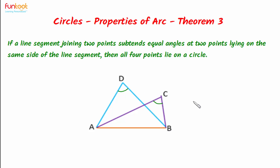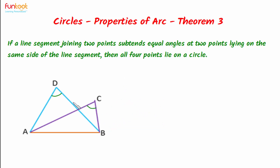Let's see the approach for doing this. We know that there is always a circle possible which passes through three given non-collinear points. So if we take points A, D, and B, we can always have a circle which passes through these three non-collinear points. We have to prove that the circle will also pass through point C. For doing this, we'll take help of the contradiction method.